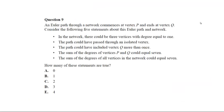This question here you don't actually need to do anything. It's just testing your knowledge of the definitions about Euler paths and networks. So let's have a look. An Euler path through a network commences at vertex P and ends at vertex Q. That's a key piece of information.